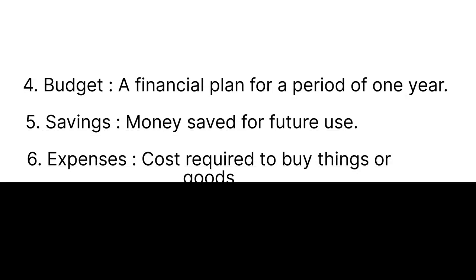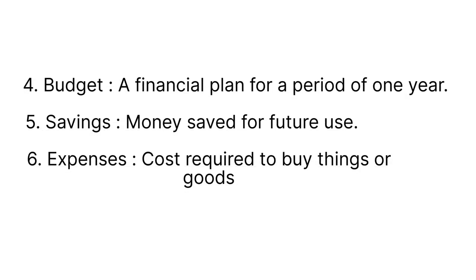Next one is Budget — a financial plan for a period of one year. Savings — money saved for future use. Expenses — cost required to buy things or goods.